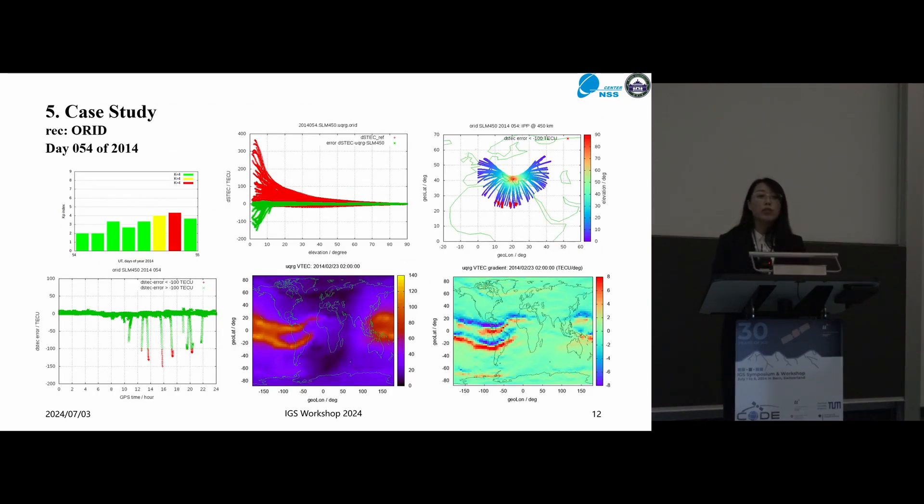So, here we show the case study on a relatively quiet day, DOY 083 of 2014, in the Solar Max. The single-layer model with shell height of 450 km is examined for the station. In this slide, OBID, which is located in the northern mid-latitude.